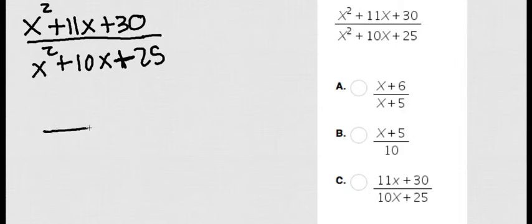Well the first step is to go ahead and factor. Let's factor the top. I need to find two numbers that when I multiply them give me 30 and when I add them give me 11.